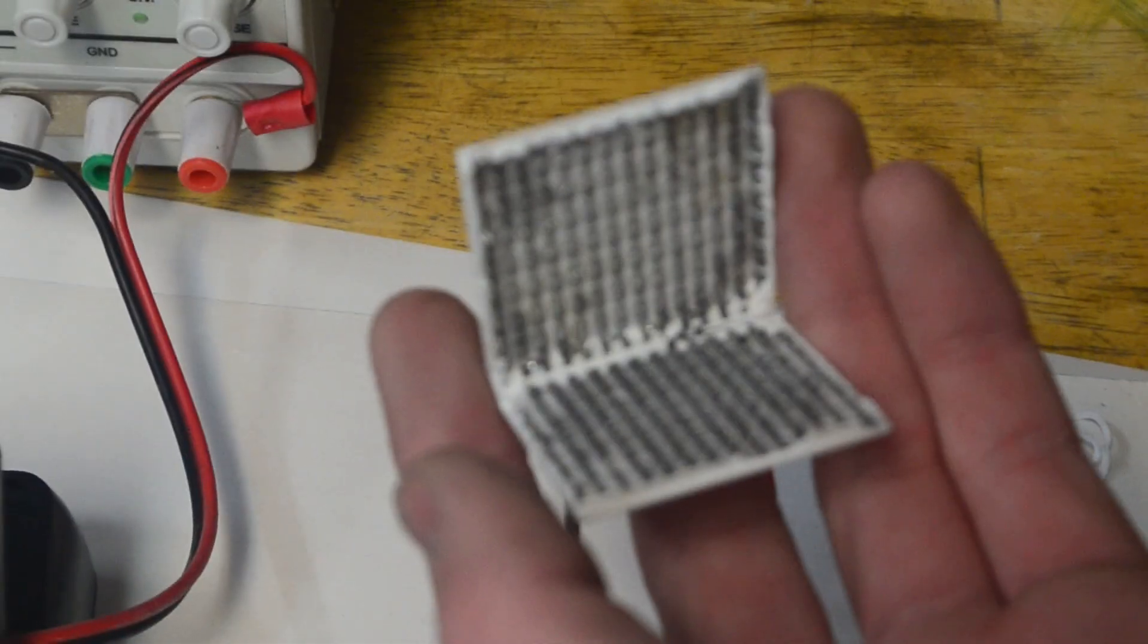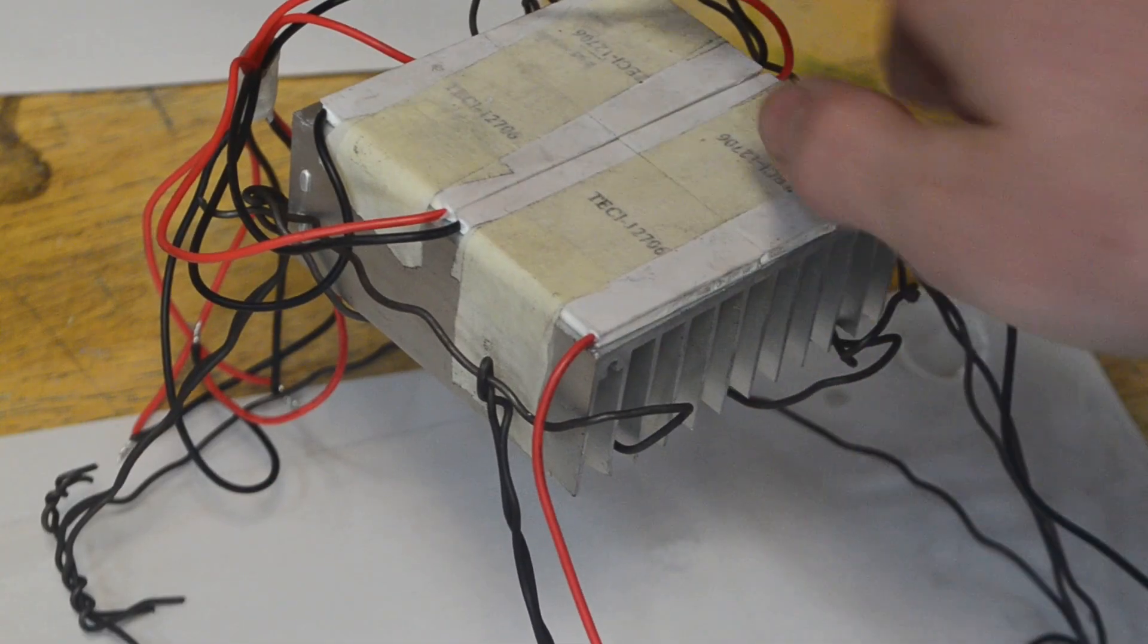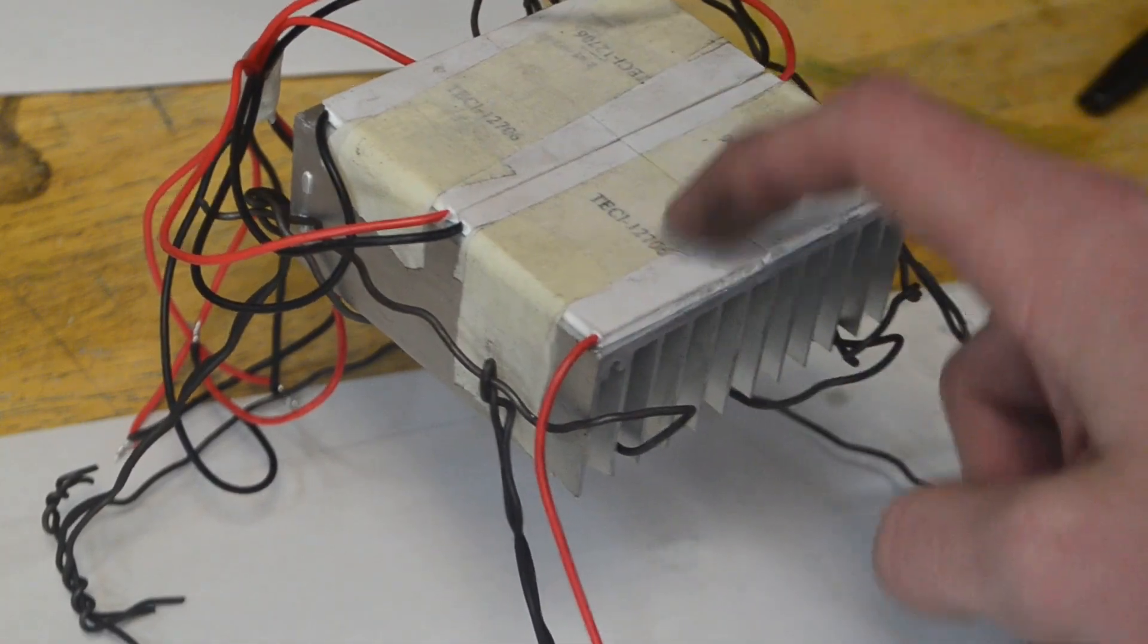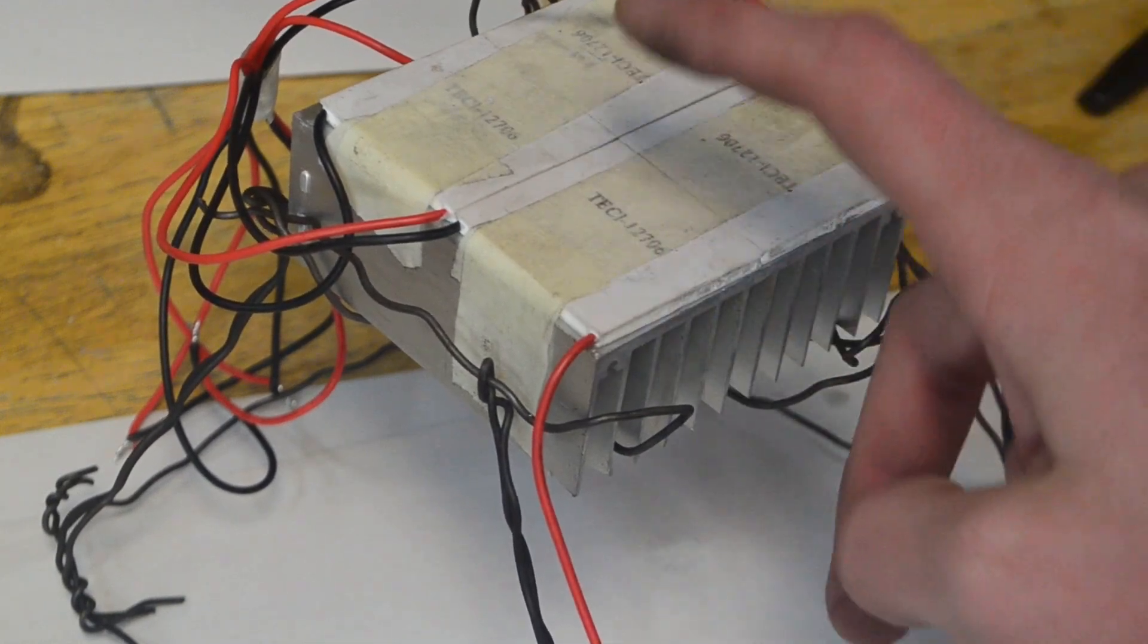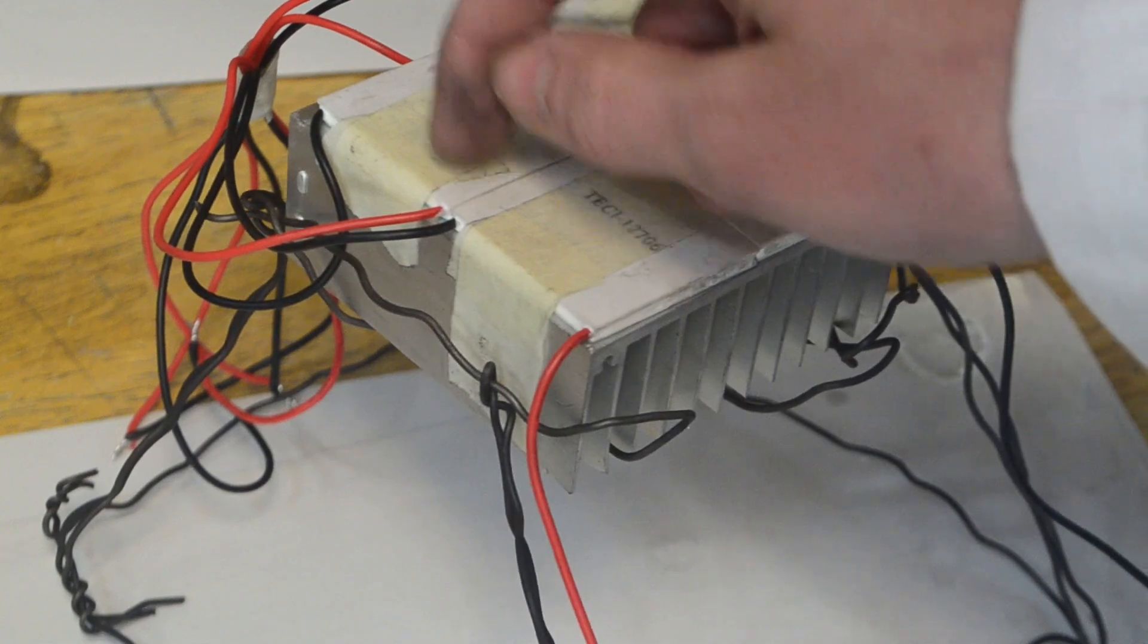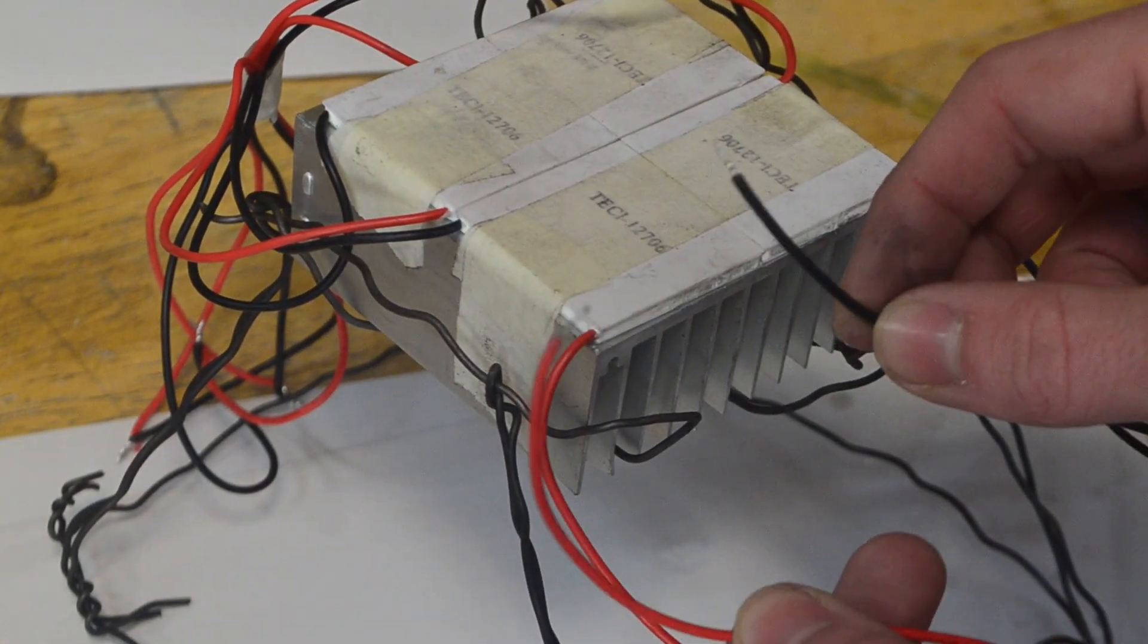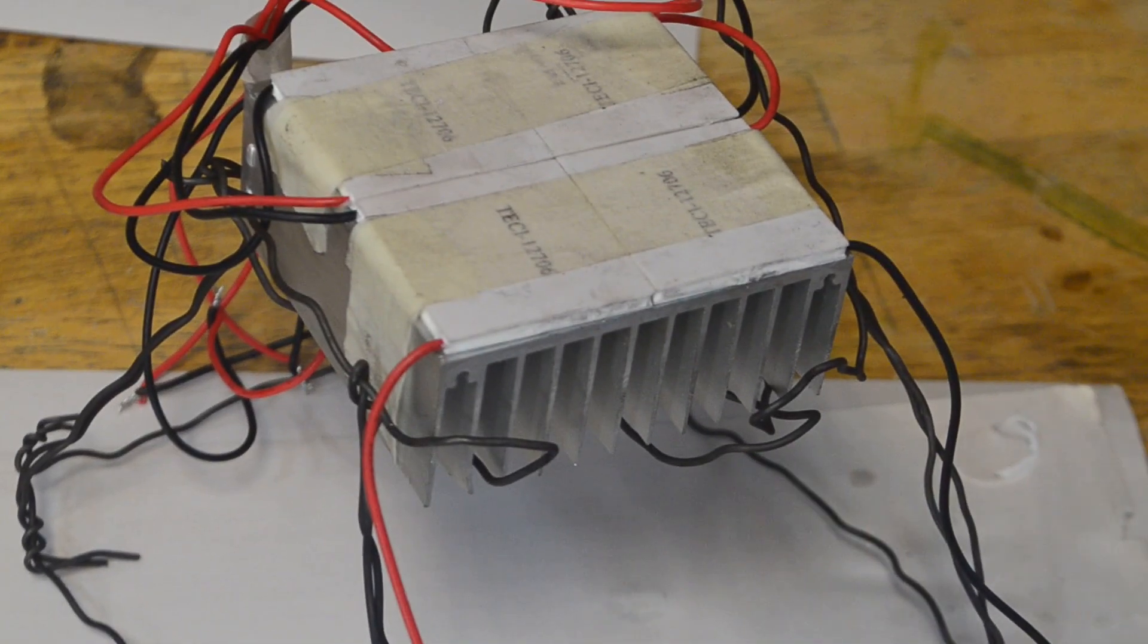So now that we know a bit on how the thermoelectric effect works, let's learn how we can make a generator out of it. For this generator, I put four of these Peltier modules onto a heat sink. Also note that the text on all of them is facing upwards so we'll get a common charge on each of the sides. Then I went through connecting the black wire of this one to the red one of this one, and so on, until I got to around here. These two wires we're left with are going to be our output wires of the generator. The heat sink was added so that it will disperse the heat more evenly across all the modules.